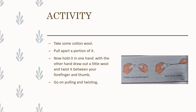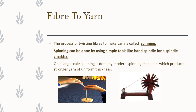We can make yarn from fiber on our own as well. Take some cotton wool and pull apart a portion of it. Hold it in one hand, and with the other hand draw out a little wool and start twisting it between your forefinger and thumb. Go on pulling and twisting. The process of twisting the fibers to make yarn is called spinning. Spinning can be done using a spindle or a charkha. On a large scale, spinning is done by modern spinning machines which produce stronger yarn of uniform thickness.